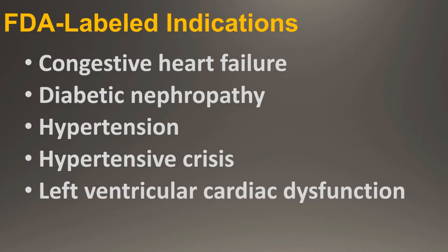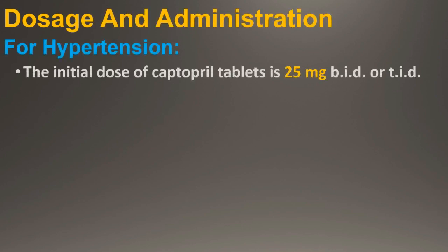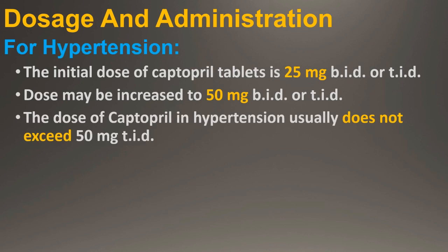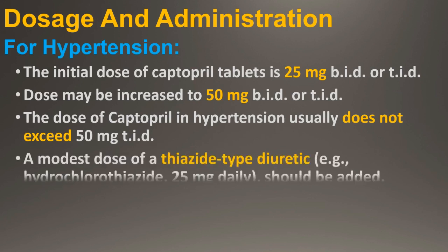Dose and administration for hypertension: The initial dose of Captopril tablets is 25 mg twice or three times a day. If satisfactory reduction of blood pressure has not been achieved after one or two weeks, the dose may be increased to 50 mg two or three times a day. Concomitant sodium restriction may be beneficial when Captopril is used alone. The dose of Captopril in hypertension usually does not exceed 50 mg three times a day. If blood pressure has not been satisfactorily controlled after one to two weeks, and the patient has not already received a diuretic, a modest dose of a thiazide-type diuretic such as hydrochlorothiazide 25 mg daily should be added.